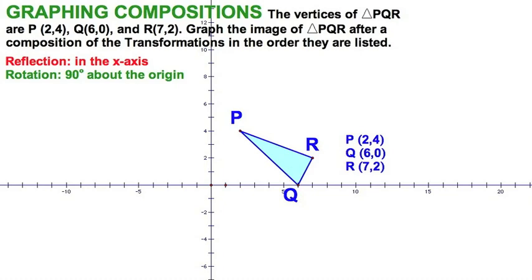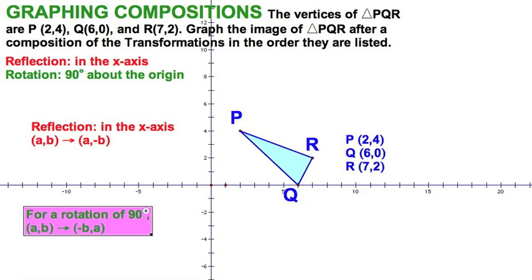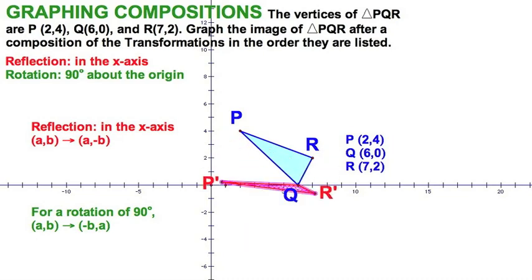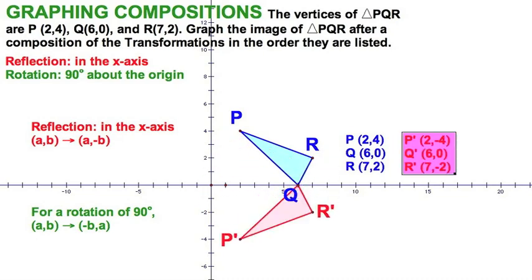Here's another example of graphing a composite transformation. We're going to take this given triangle PQR on the coordinate plane. We're going to reflect it in the x-axis, then rotate it 90 degrees about the origin. For this, let's just stick to the easy way. We'll use our coordinate rules for reflection and coordinate rules for a rotation. First up, let's reflect. We know what it's going to look like. And it makes sense according to our coordinate rules.